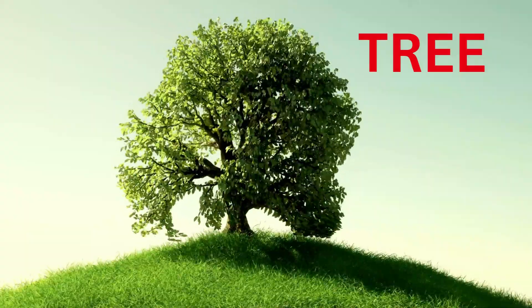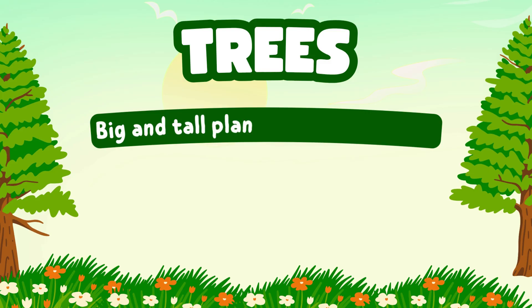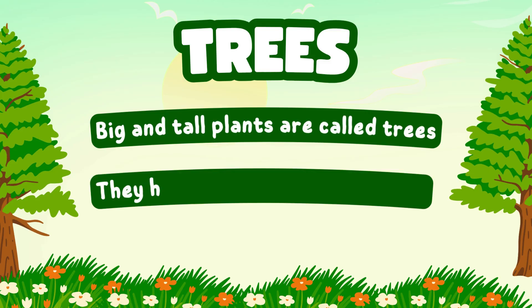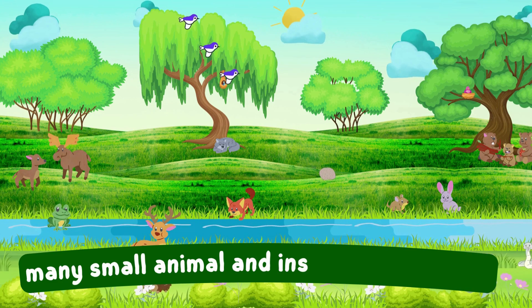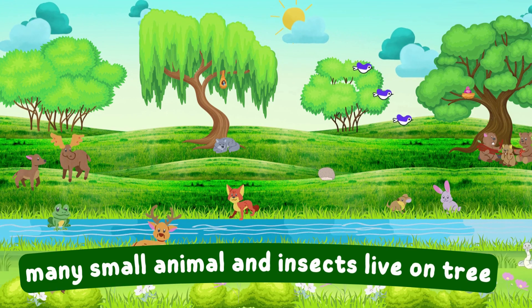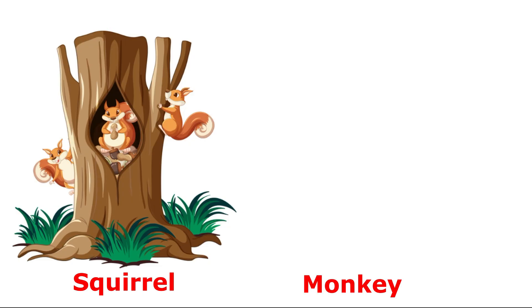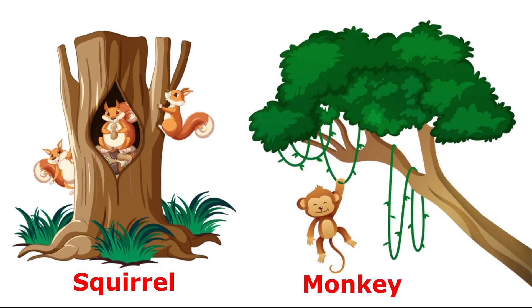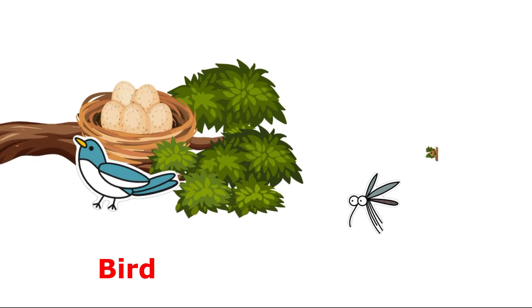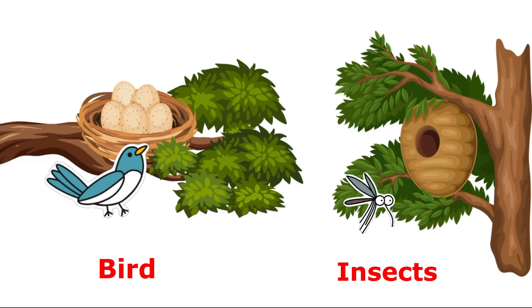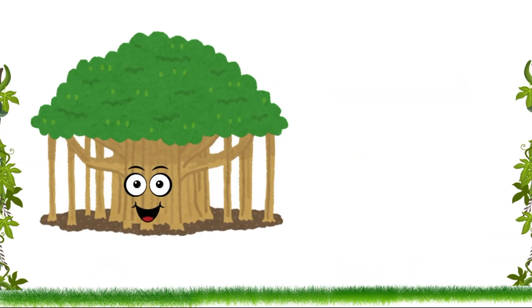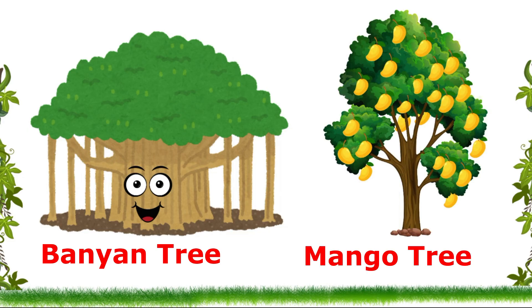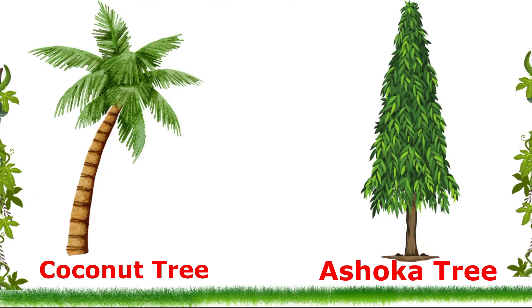Trees. Big and tall plants are called trees. They have a strong and woody stem. Many small animals and insects live on trees. Examples: banyan tree, mango tree, coconut tree, ashoka tree.